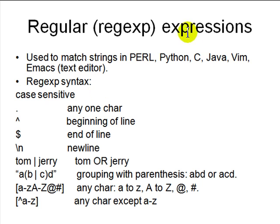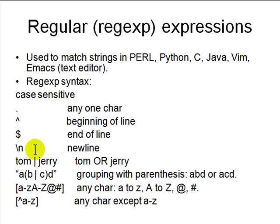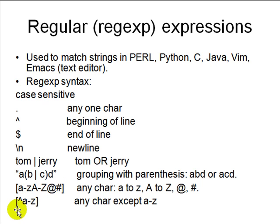Regular expression syntax: dot (.) means any character. Caret (^) means beginning of a line. Dollar ($) means end of a line. Backslash is an escape for special characters — \n means a new line. Pipe (|) means OR, e.g., 'Tom|Jerry'. Parentheses group expressions, e.g., '(ab)|(cd)' means 'ab' or 'cd'. Square brackets match any one character in the set, e.g., [a-zA-Z0-9#]. Caret inside brackets [^a-z] means anything except a-z.